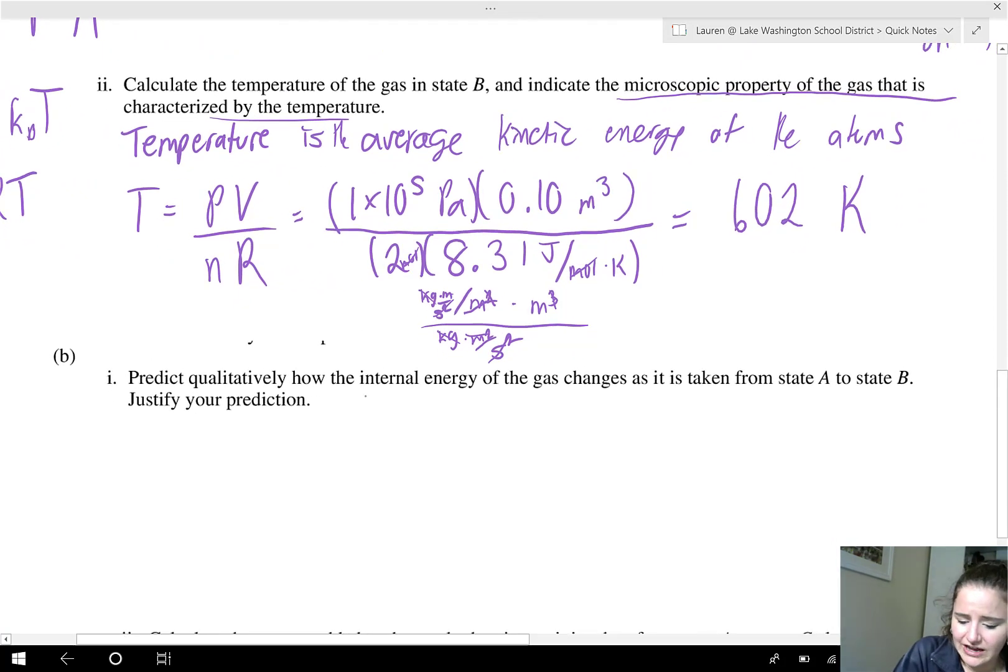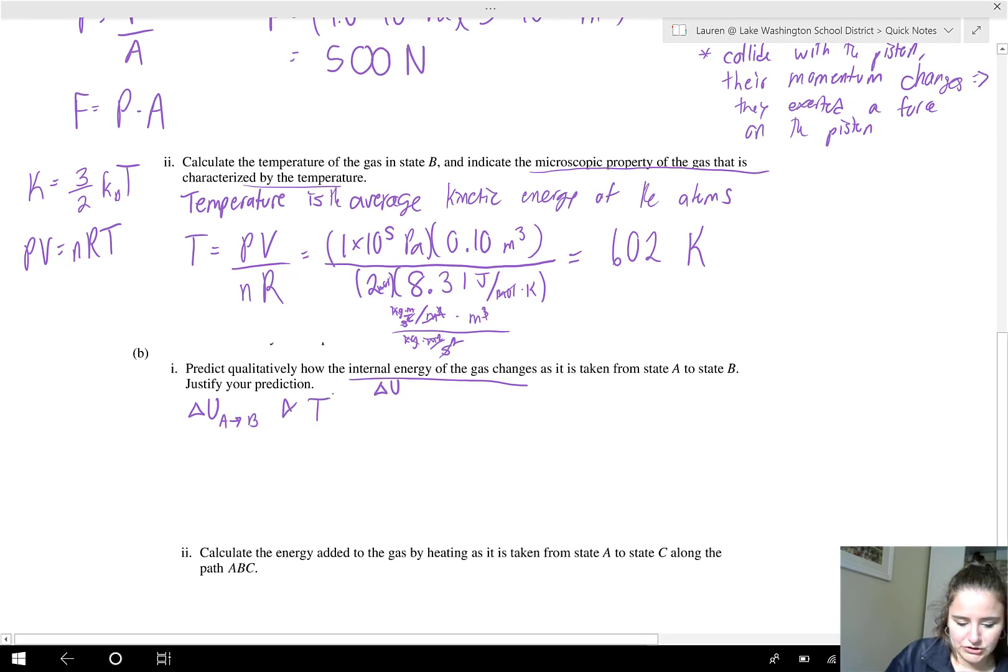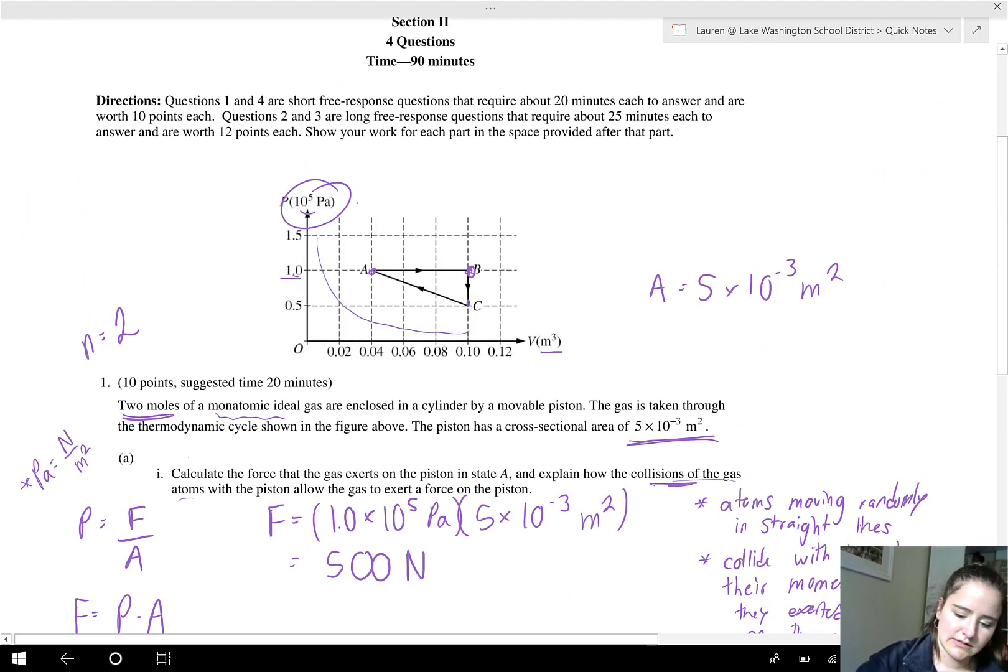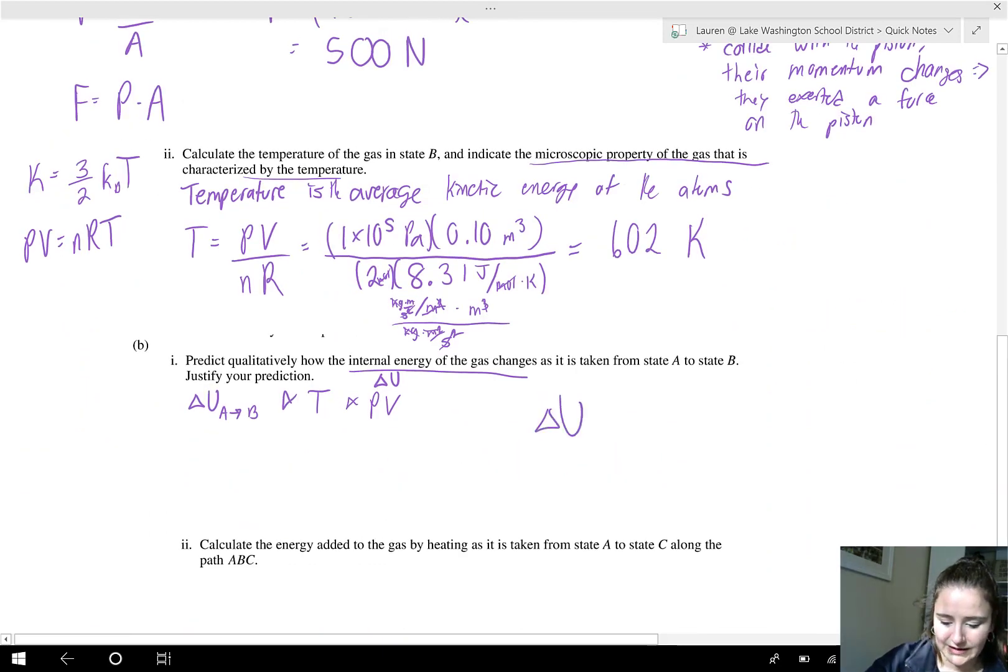Predict qualitatively how the internal energy of the gas changes, so internal energy is delta U, as it is taken from state A to state B. So we're looking for delta U from A to B. Justify your prediction. So delta U is proportional to temperature, which is proportional to PV. You can also kind of think on here of the iso lines that would be there. You can see that B is at a higher temperature. So as it's taken from state A to state B, it's going up in temperature. P times V is also going up. Here it's 0.04. Here it's 1 times 0.1, so 0.01. So that is going up. All of those are great justifications for saying that delta U increases. So we have a positive change in internal energy because it's proportional to temperature and blah, blah, blah.